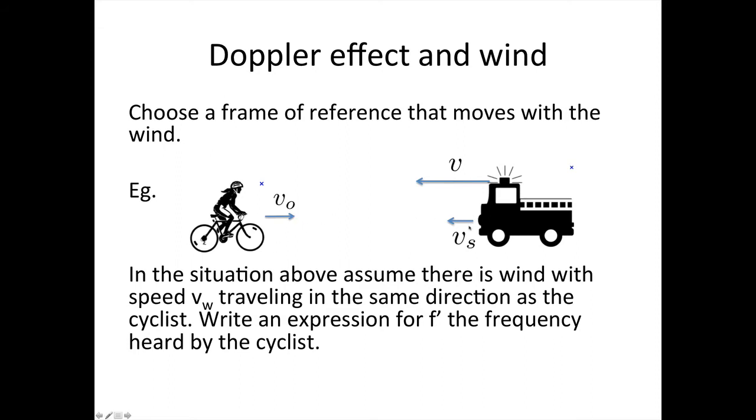So let's take this situation again where we've got an observer traveling towards the source. The velocity of the observer is V0, the velocity of the source is Vs, and the velocity of the waves through the medium is V. And we've now got wind traveling in the same direction as the observer, so in this case traveling to the right here. And what we need to do is write an expression for F dash, the frequency that this observer now hears.